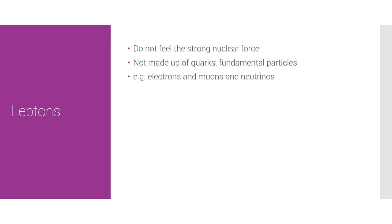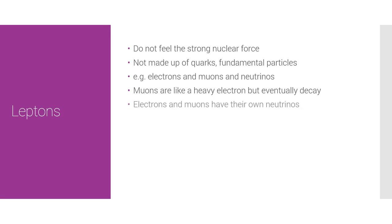The electron is an example of a lepton, as are muons and neutrinos. Muons are basically like a heavy electron, but they eventually decay into a standard electron. Electrons and muons have their own neutrinos: you have the electron neutrino, anti-electron neutrino — as seen in a previous video — the muon neutrino, and anti-muon neutrino.